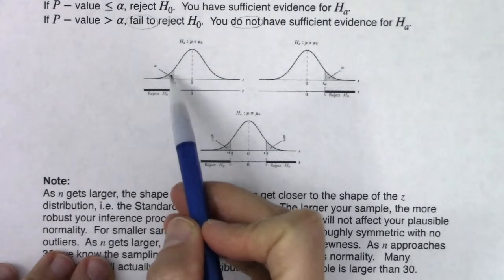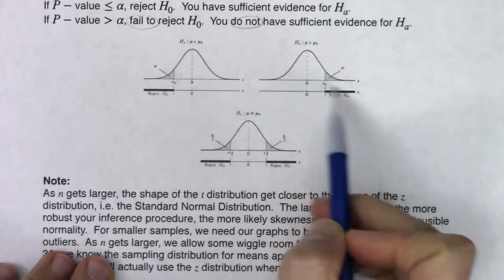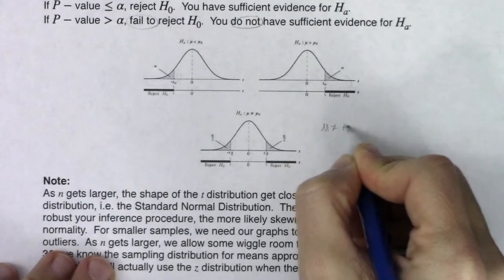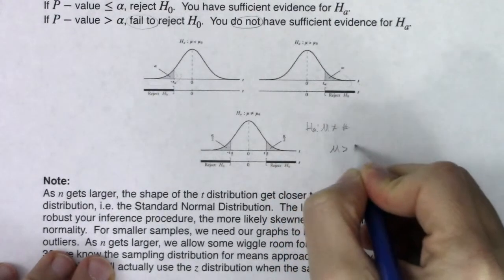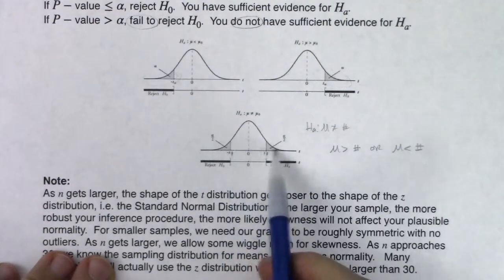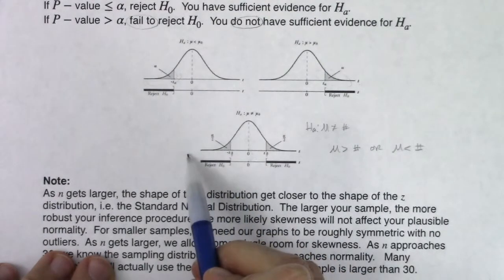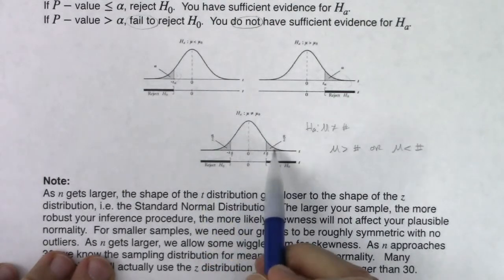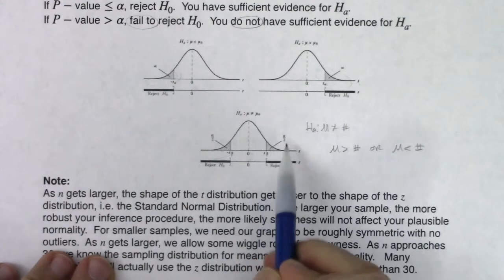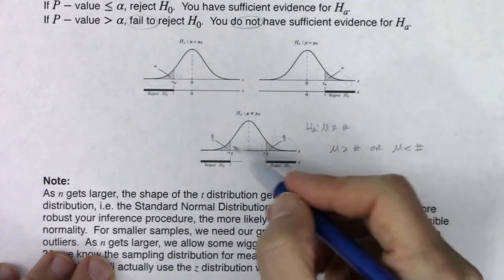If you have a left-tailed test, shade the area to the left of your test statistic. If you have a right-tailed alternate, shade to the right. When you have that two-sided test — mu does not equal a number — that includes greater than or less than, so you have two tails. If your test statistic is negative, shade left and double it for symmetry. If it's positive, find the area to the right and double it for symmetry.